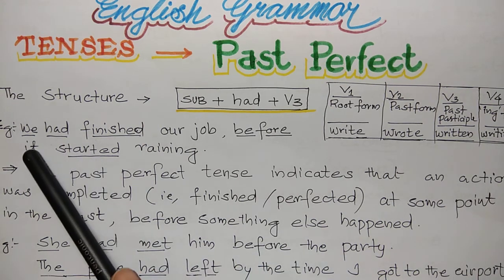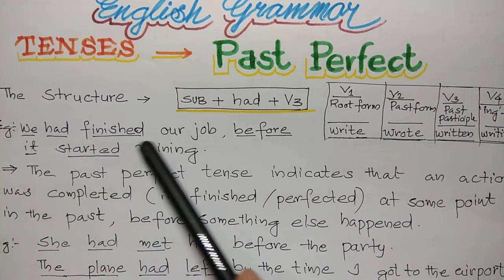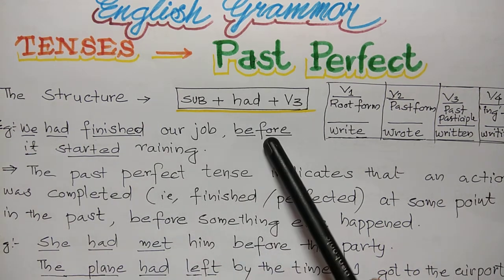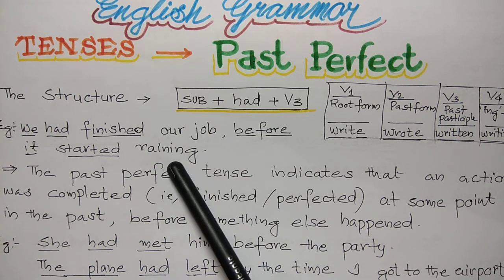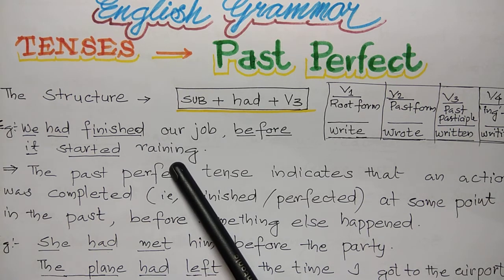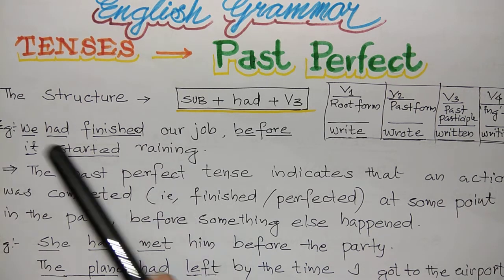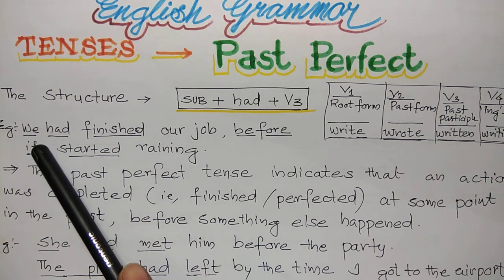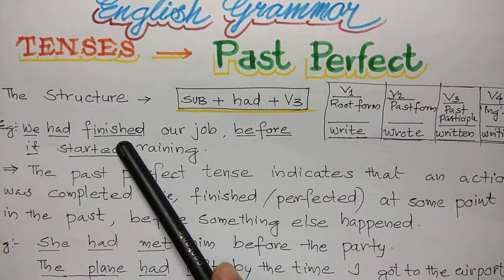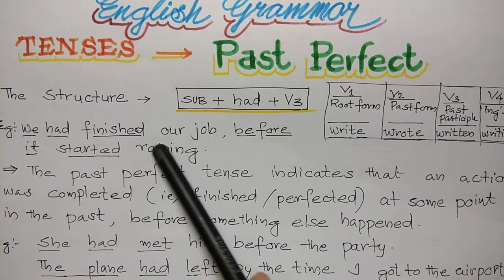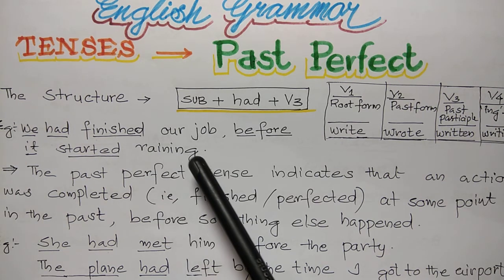See the example: 'We had finished our job before it started raining.' That is: 'we' plus 'had' plus the past participle of 'finish', which is 'finished' — 'our job'.